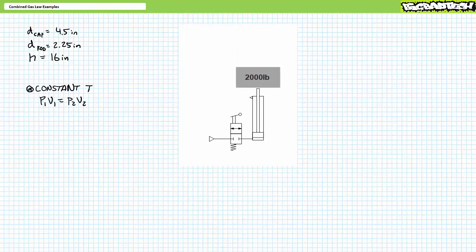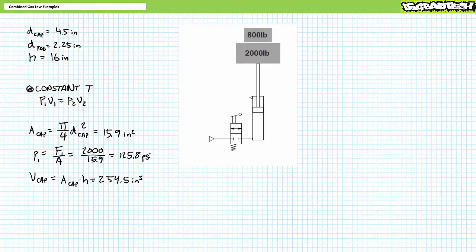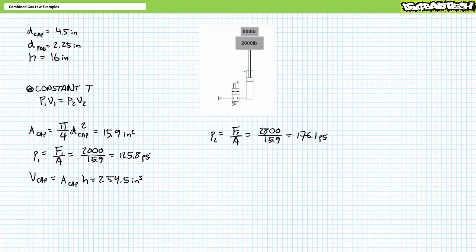This is a Boyle's law problem relating pressure and volume at constant temperature. First, determine the initial pressure and volume conditions using Pascal's law. The cap has an area of roughly 15.9 square inches. Pascal's law demonstrates that a pressure of roughly 125.8 psi should be sufficient to lift the 2,000-pound object. At full extension, the volume of the cap end is roughly 254.5 cubic inches. When the valve moves to closed position, we have a known volume of pressurized air trapped in the cap end. When 800 more pounds is added, force increases, pressure increases, and volume should decrease. The cap end experiences an increased pressure of roughly 176.1 psi.